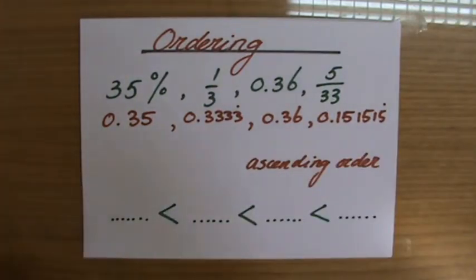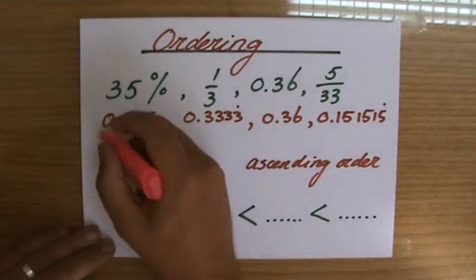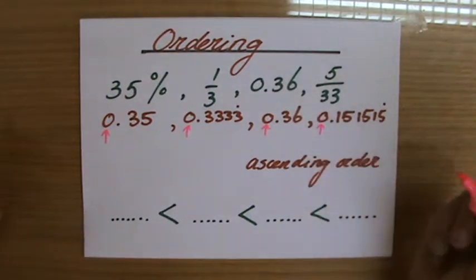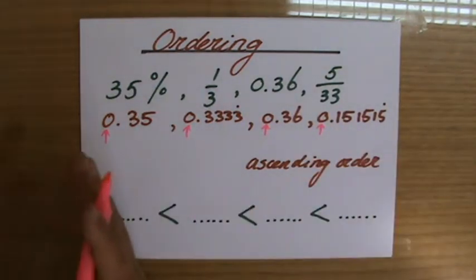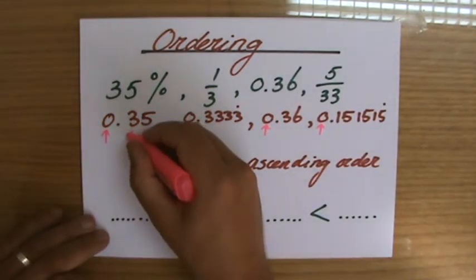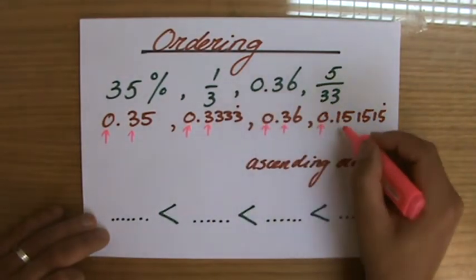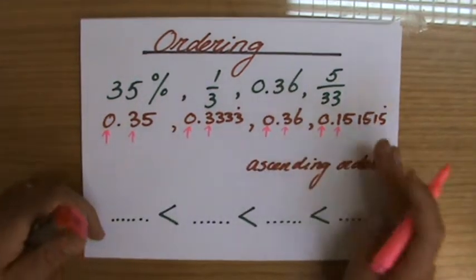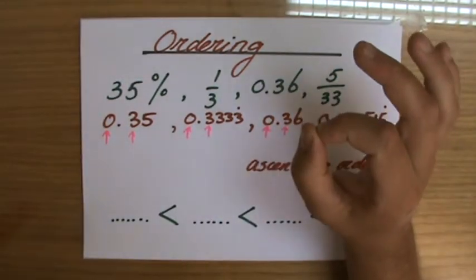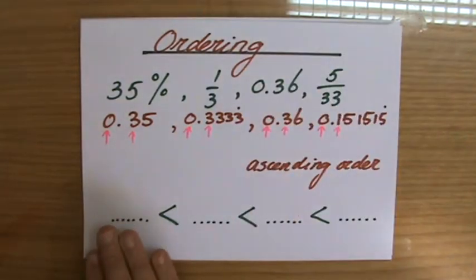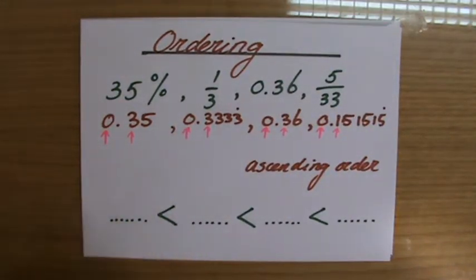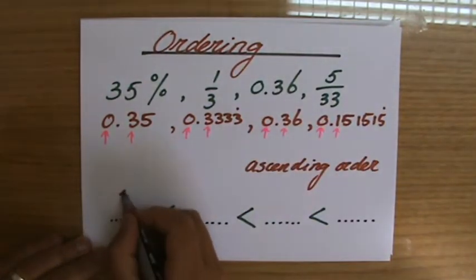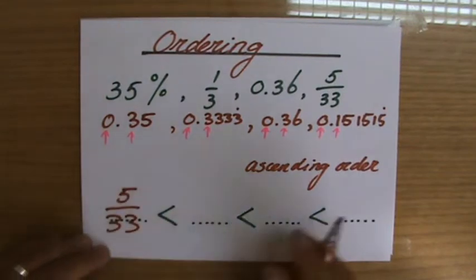The units digit: it's zero for all of them. Then we move one place value — I have a 3, a 3, a 3, and a 1. They are all the same except this one, which is clearly the smallest. Be careful: we do not write down 0.151515 — we write down the original number, 5 over 33.